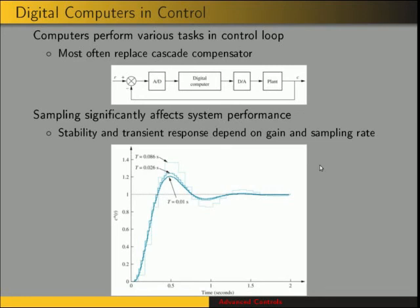Before, in control systems, whenever we looked at controllers, they were analog systems — they had continuous inputs and outputs. The stability and transient response of the resulting system was governed by the gain of the compensator. Now, in digital control systems, we have to also consider the sampling rate, because this significantly affects system performance. The stability and transient response are also dependent on the sampling rate, in addition to the gain.